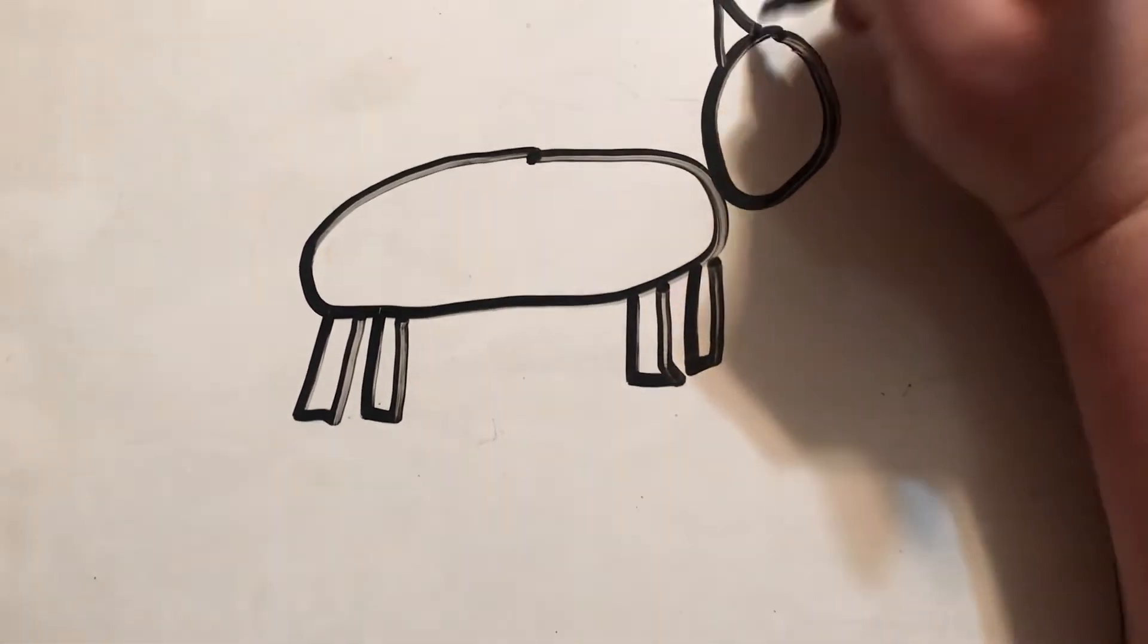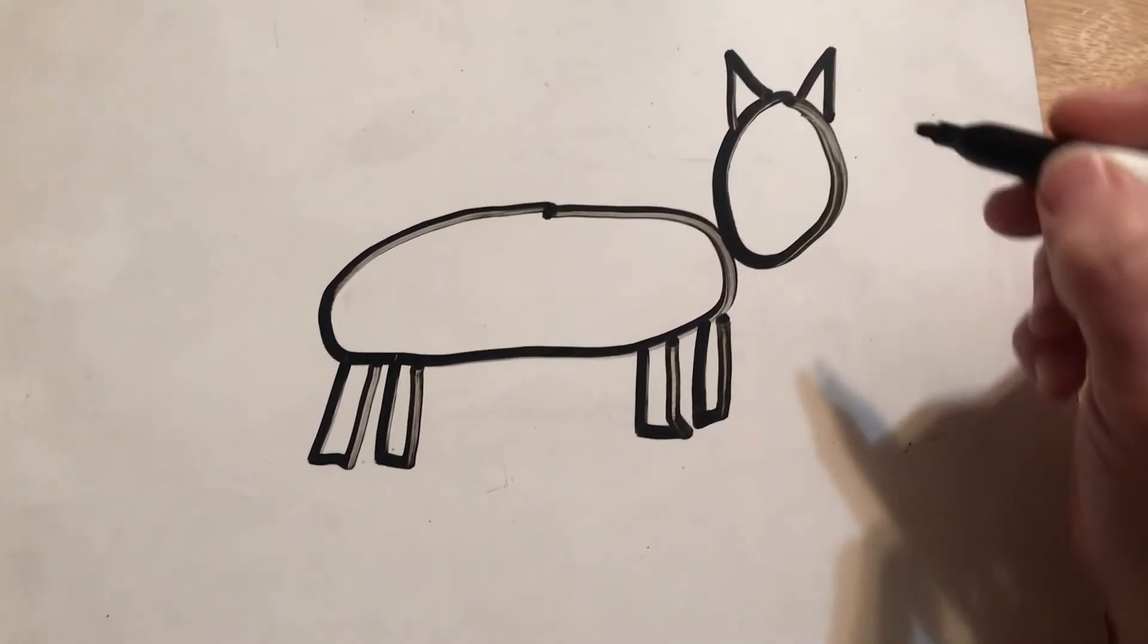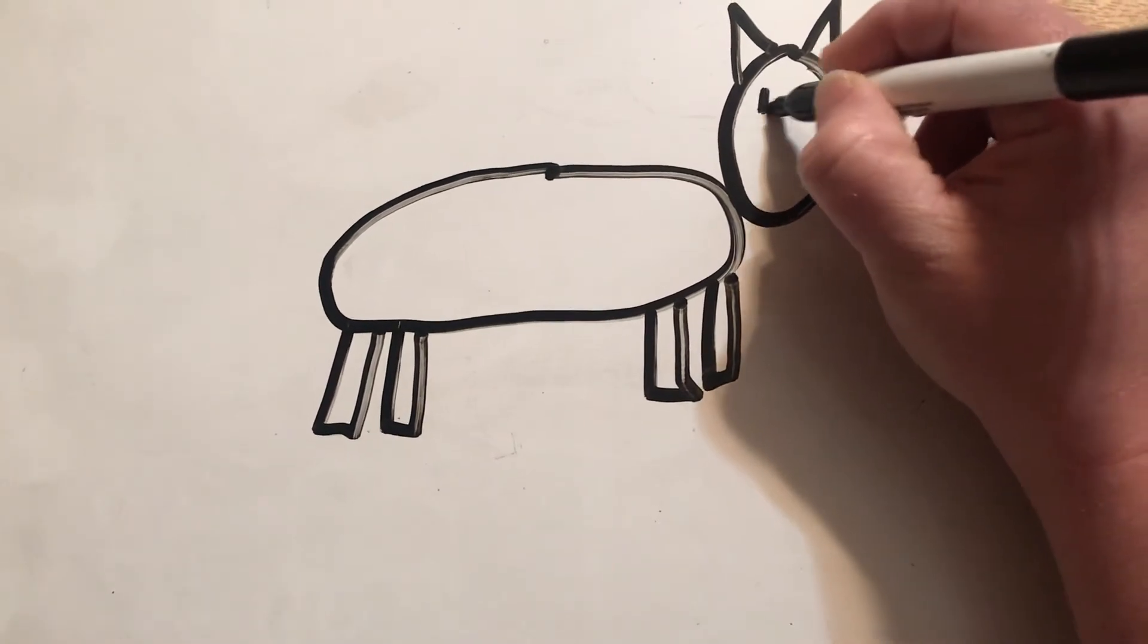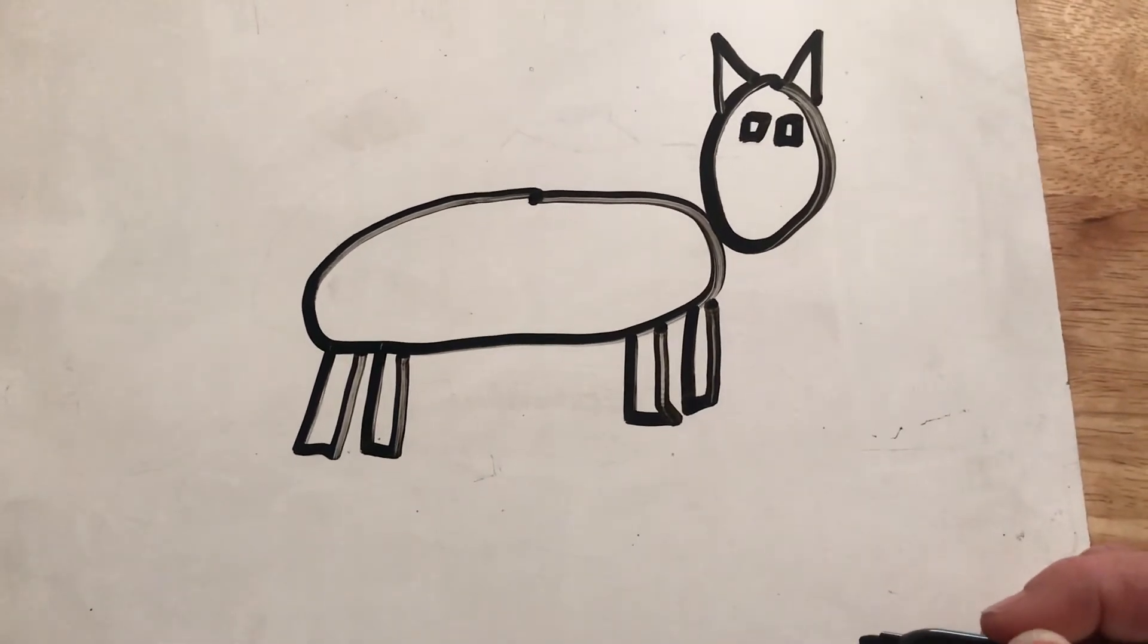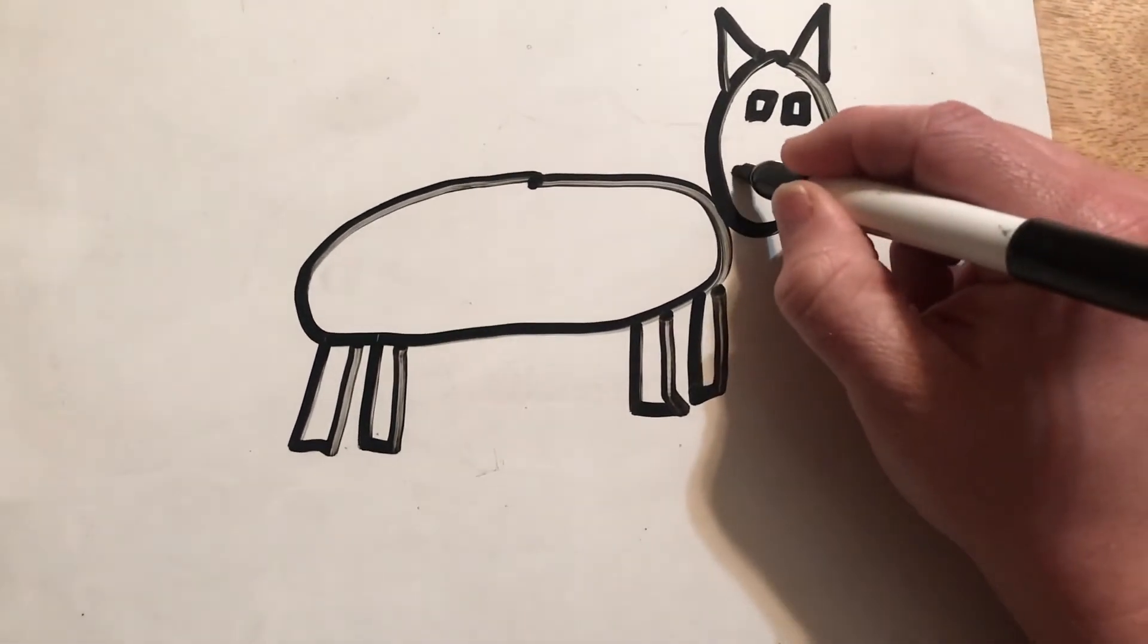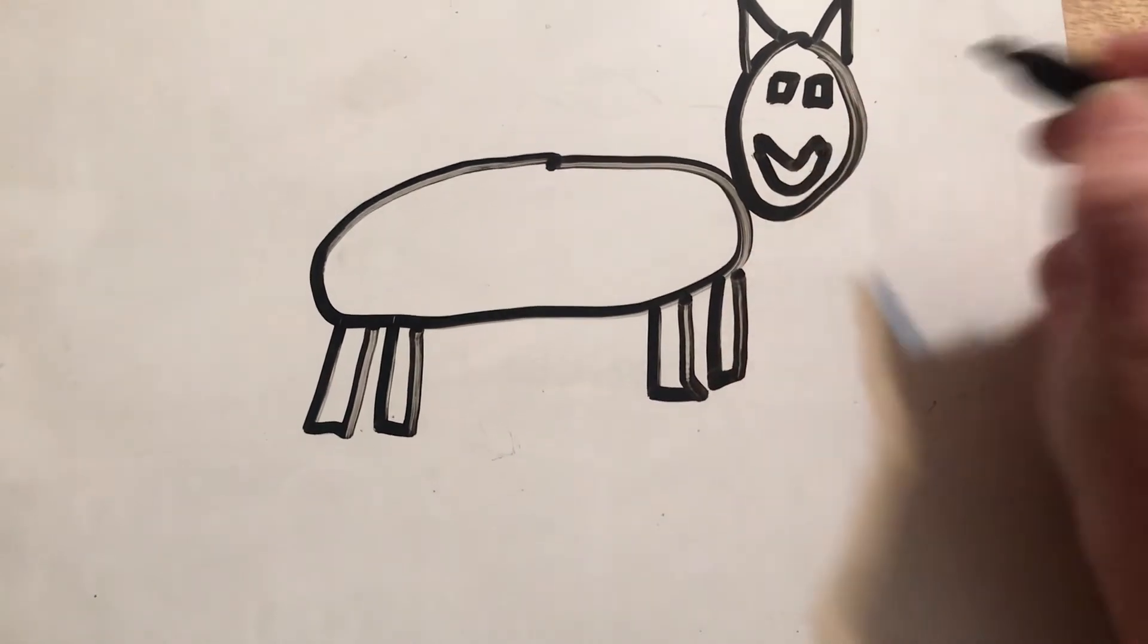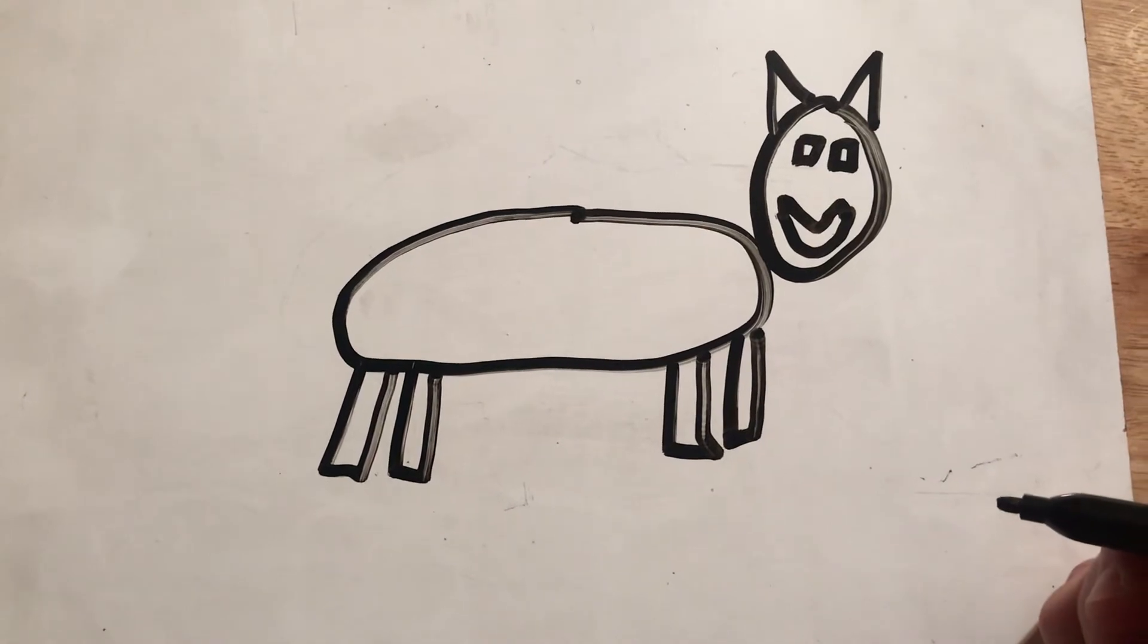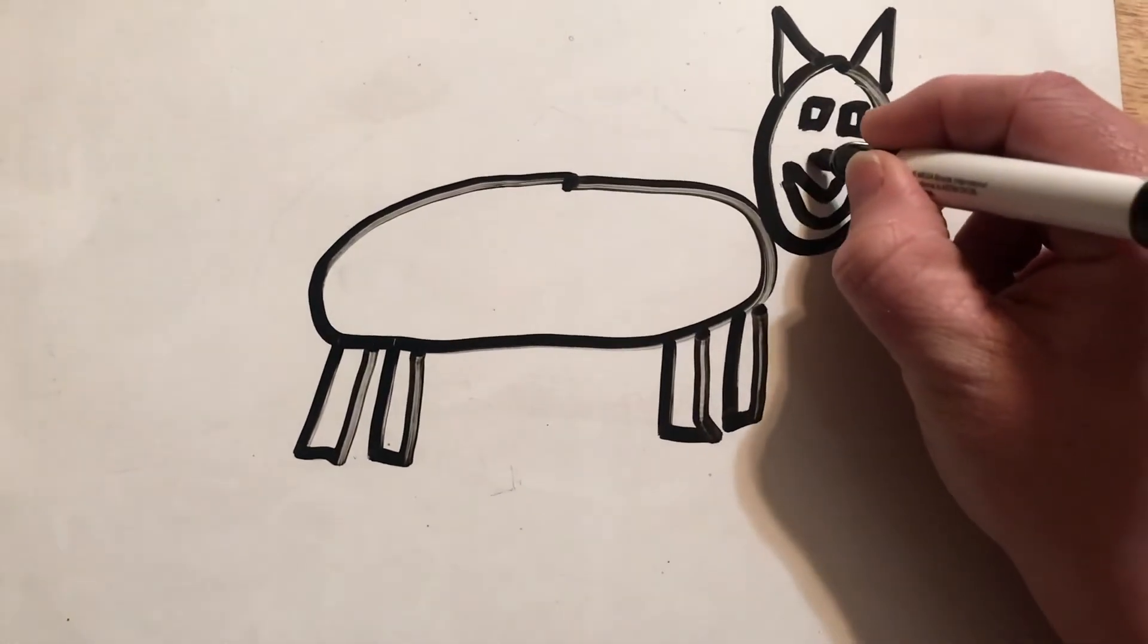Triangles for the ears, squares for the eyes, a crescent for the mouth. And then we can do a, hmm, we could do a semicircle for the nose.